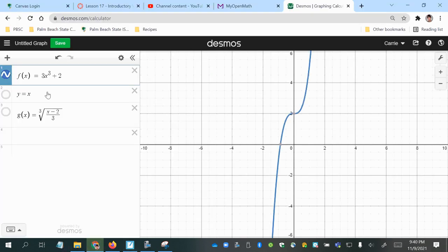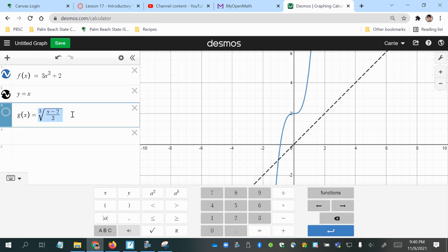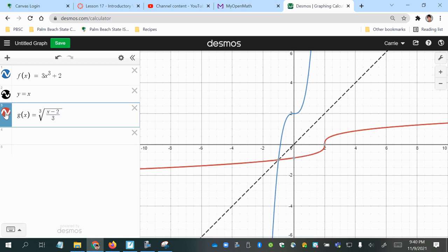Okay. So here's my original function, 3x cubed plus 2. We know that for inverse functions, the domain and range switches, so that it reflects across the y equals x line, the identity function. And here is the cube root of x minus 2 over 3, which we figured out to be the inverse function of f.